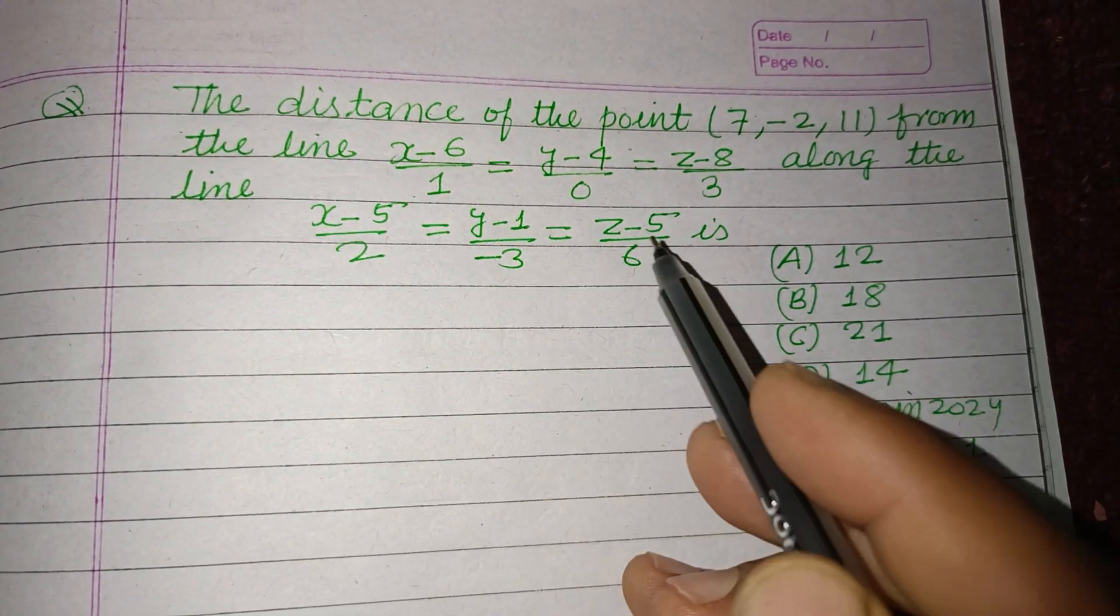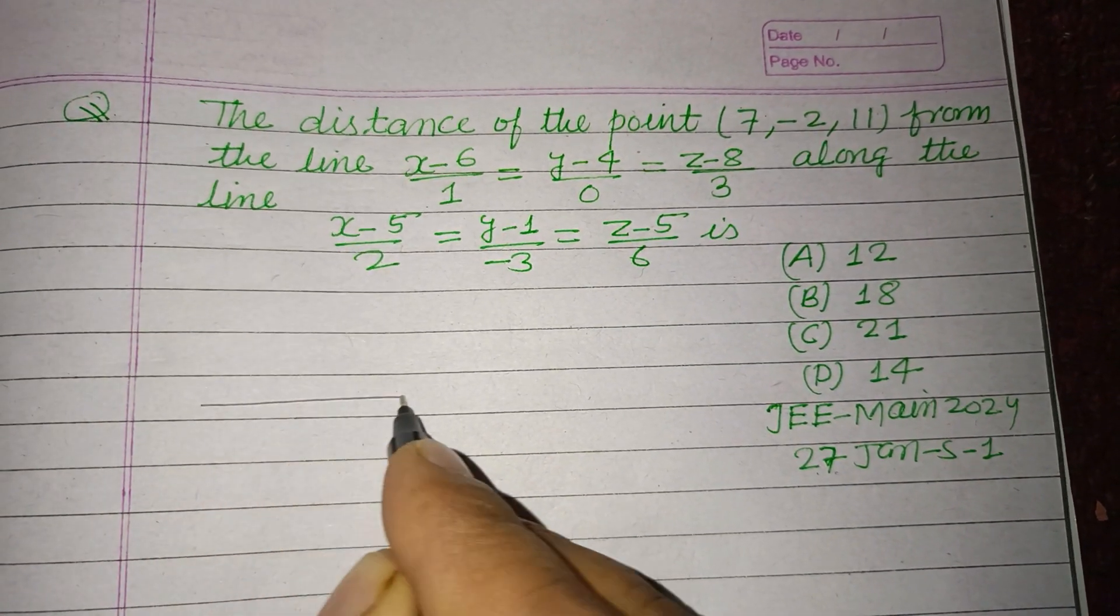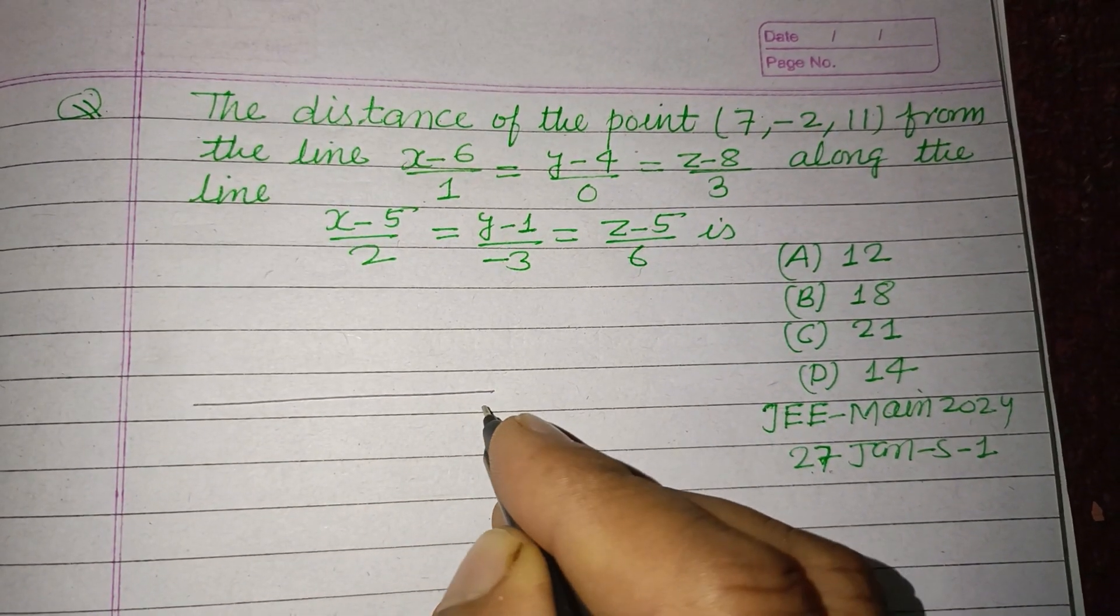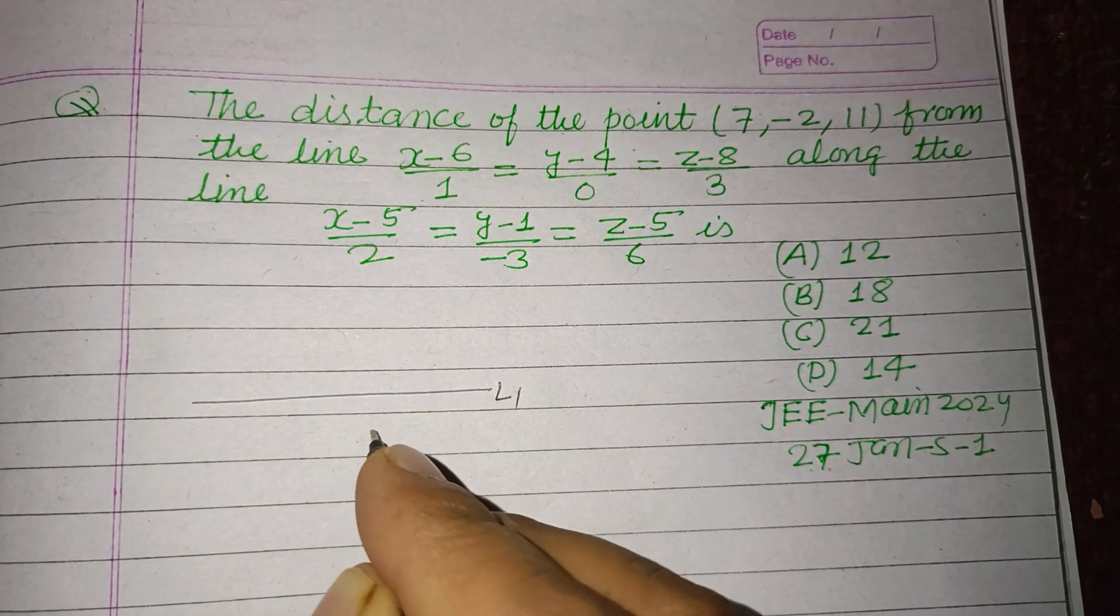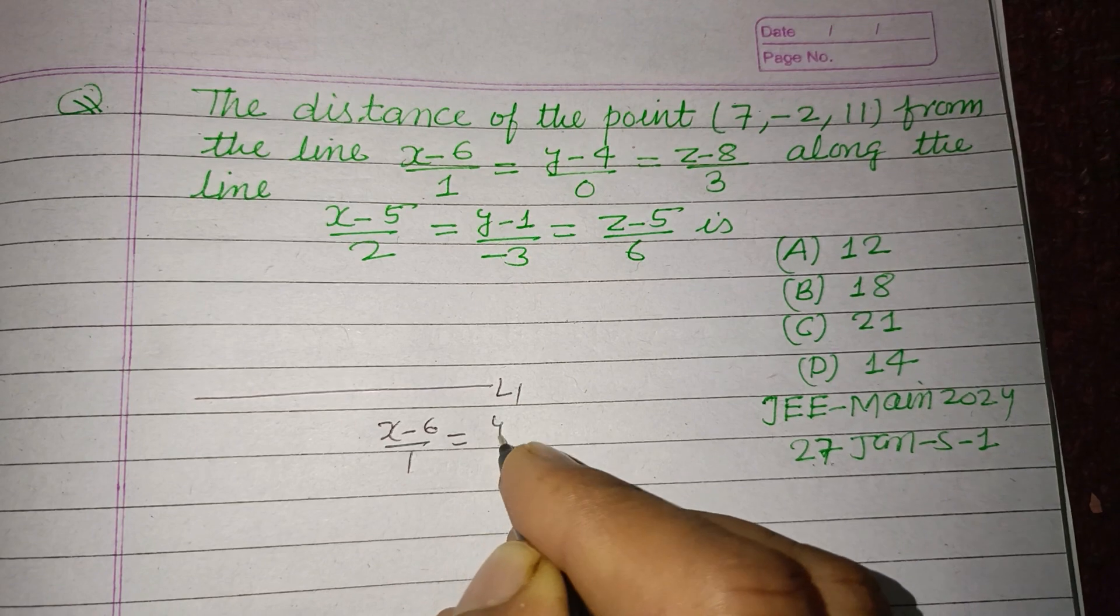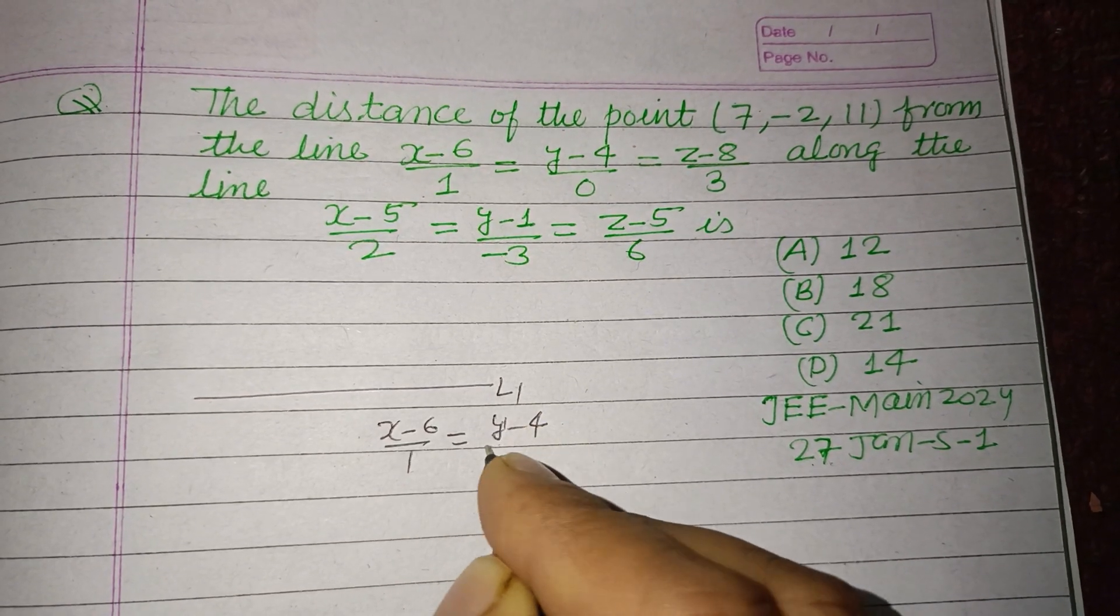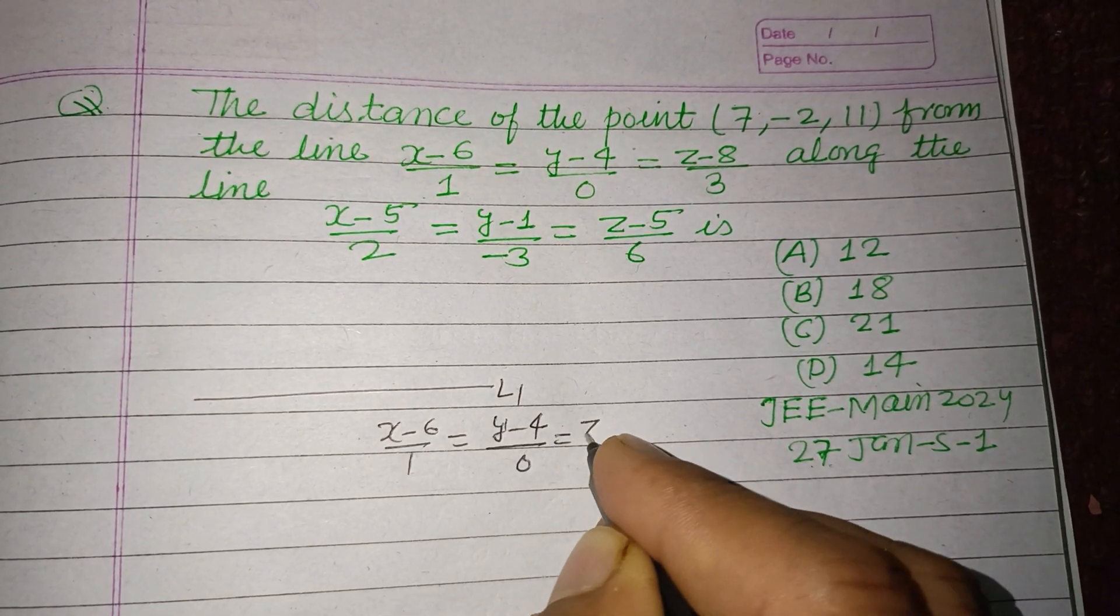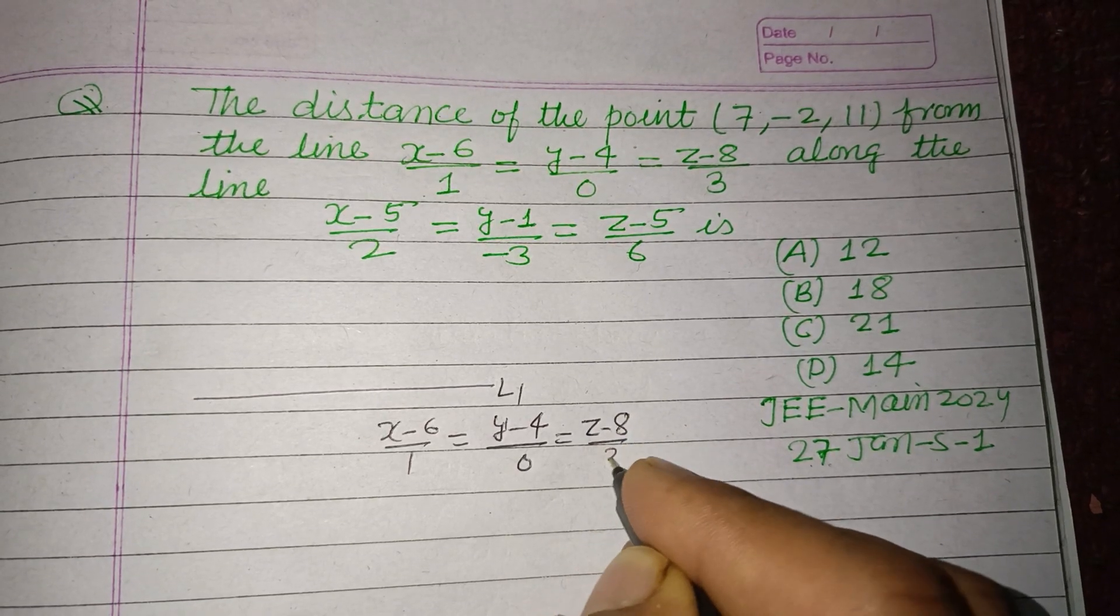along the line. So here is a line L1 whose equation is given to us: (x-6)/1 = (y-4)/0 = (z-8)/3.